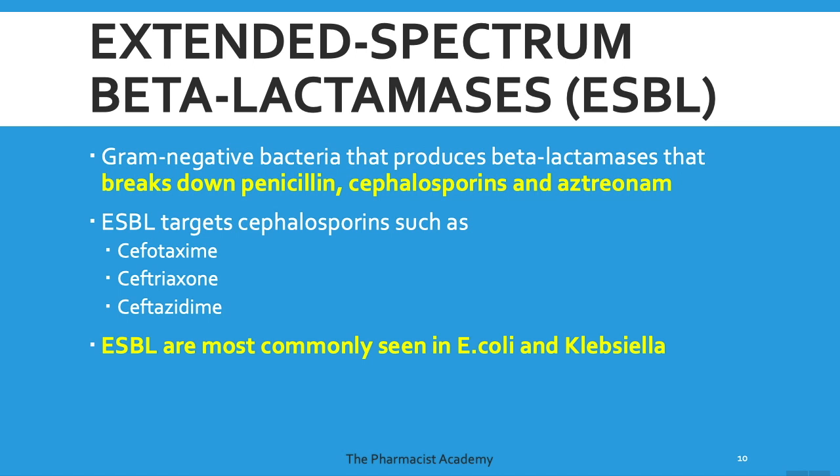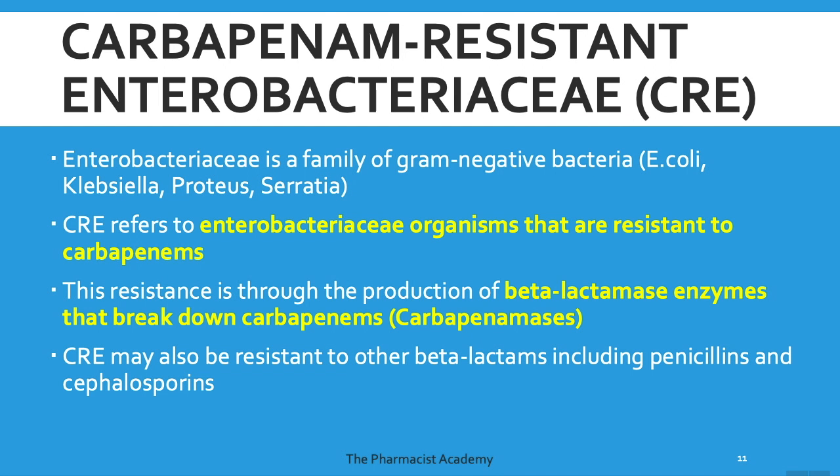ESBL is mostly seen in E. coli and Klebsiella. Carbapenem-resistant Enterobacteriaceae, or CRE — Enterobacteriaceae is a large family of gram-negative bacteria; common ones include E. coli, Klebsiella, Proteus, and Serratia. CRE refers to Enterobacteriaceae organisms that are resistant to carbapenems, which are also beta-lactams. This resistance is due to the production of beta-lactamase enzymes that break down carbapenems, called carbapenemases. CRE may also be resistant to other beta-lactams, including penicillins and cephalosporins.